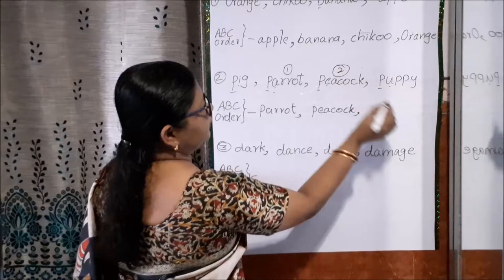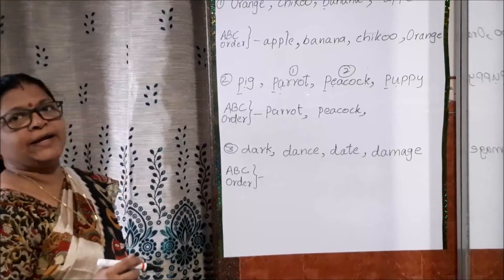After peacock, now what is, this is second one. Then what is remaining now? P, U and P, I. In this P, U and P, I, which one will come first?